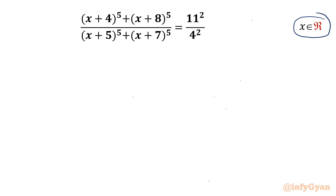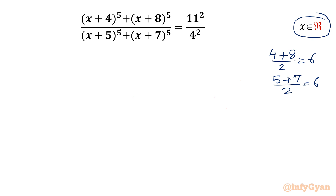In the numerator there are two numbers 4 and 8 in the LHS. I will take the average of that, which gives us 6. In the denominator there is 5 and 7. If I take the average of that it is also 6. So our substitution would be x plus 6 equal to t.